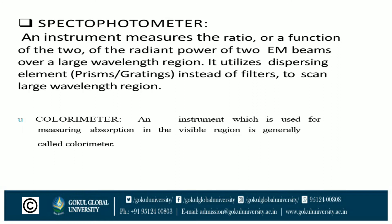Now the colorimeter. An instrument which is used for measuring absorption in the visible region is generally called a colorimeter.